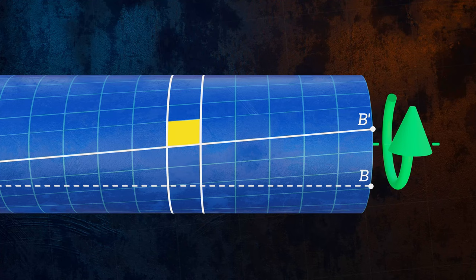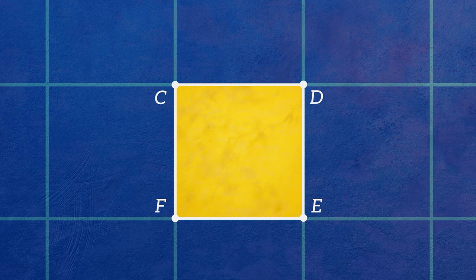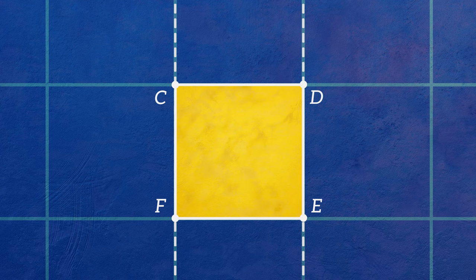Because the bar is axisymmetric, we know that individual cross sections will rotate but won't get distorted. So the sides CF and DE of the element will only move vertically along the lines shown here.